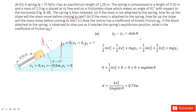Now we apply conservation of energy: initial energy equals final energy. Initial kinetic energy plus initial elastic potential energy plus initial gravitational potential energy equals final kinetic energy plus final elastic energy plus final gravitational potential energy.